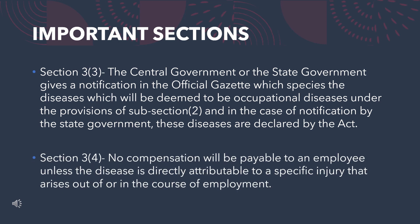Let's see some important sections related to the same act. Section 3, Subsection 3: the central government or the state government gives a notification in the official gazette which specifies the disease which will be deemed to be an occupational disease under the provisions of Subsection 2. In the case of notification by the state government, these diseases are declared by the act. Section 3, Subsection 4: no compensation will be payable to an employee unless the disease is directly attributable to a specific injury that arises out of or in the course of employment.